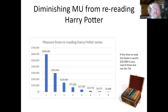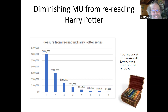Diminishing marginal utility from rereading Harry Potter: how much pleasure do you get from the Harry Potter series? How much would you pay to have it in the universe with you? Say $600. How much would you pay to read them twice? It's going to be less — almost certain. Not always, but for most people it will be less. Keep going — by the eighth time, presumably a lot less. This is hedonic adjustment. This is diminishing marginal utility. And this is your downward-sloping demand curve for the Harry Potter books.